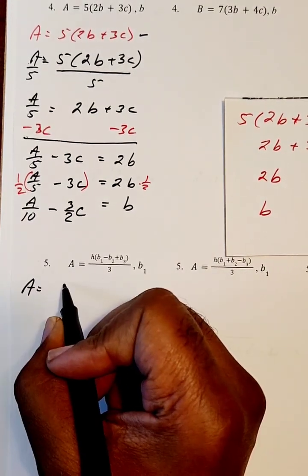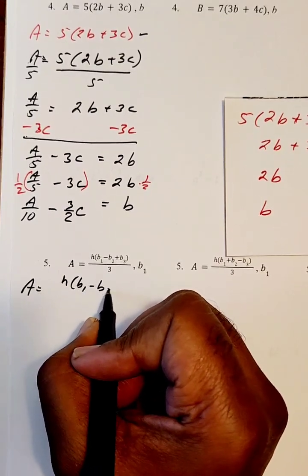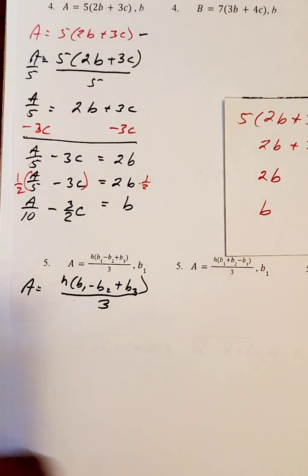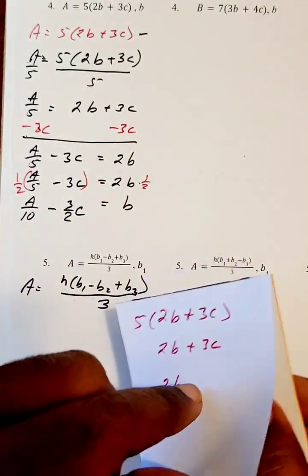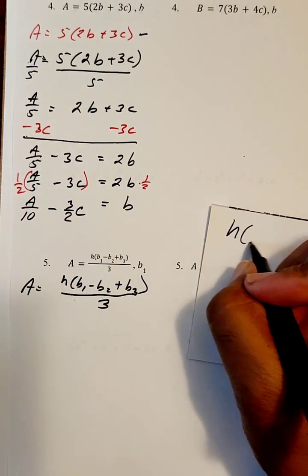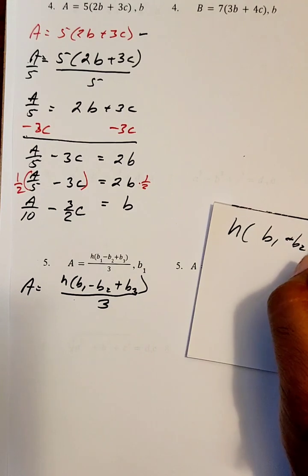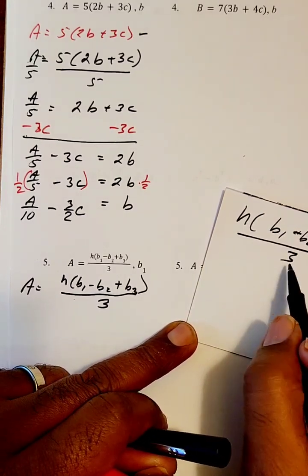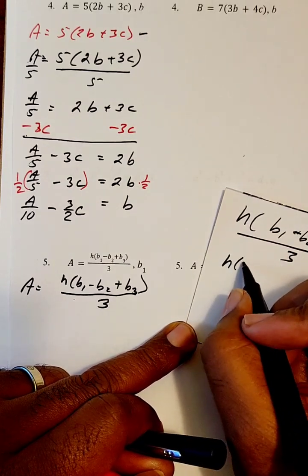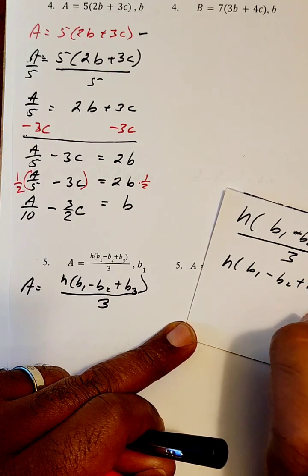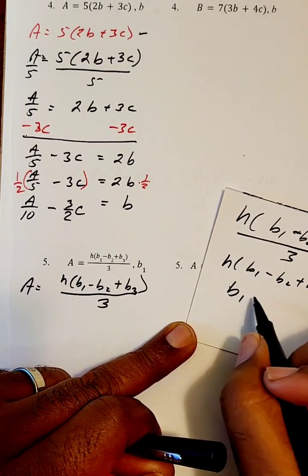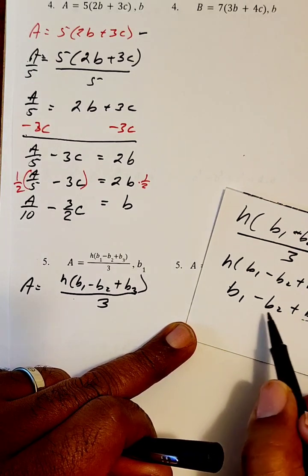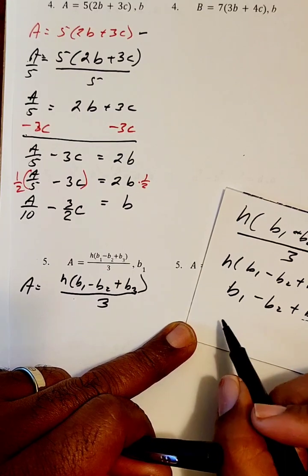We're looking at A equals H times the quantity B1 minus B2 plus B3, all over 3, and we're solving for B1. The order we're going to use: we'll get rid of the dividing 3, which gives us H times B1 minus B2 plus B3. Then we'll get rid of the multiplying H, which releases the entire parenthesis giving us B1 minus B2 plus B3. Then we'll get rid of the subtracting B2 and the adding B3, and we're down to B1.